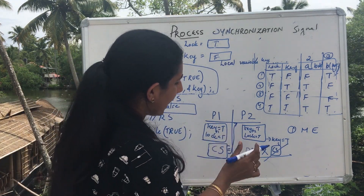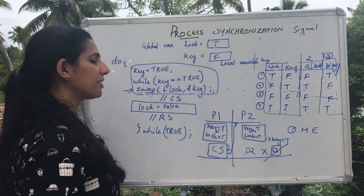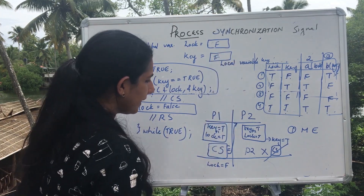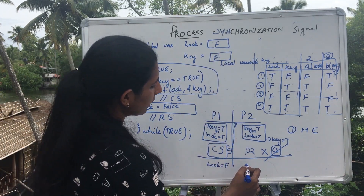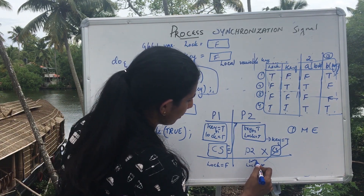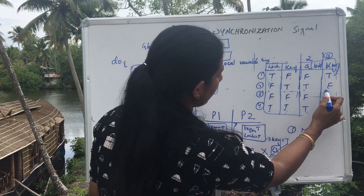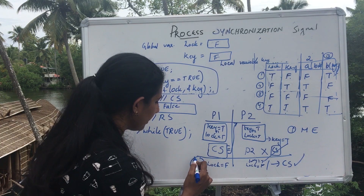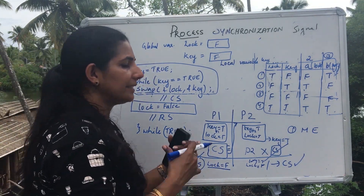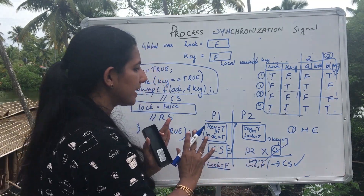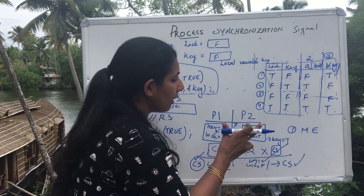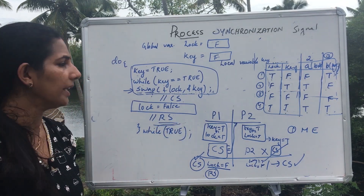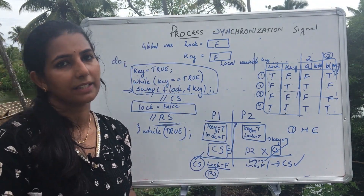When can P2 enter the critical section? When P1 finishes its critical section, it sets lock equal to false. Now lock becomes false. If P2 tries again with key equal to true and lock equal to false, after the swap the key becomes false and P2 can enter the critical section. Once P1 comes out of the critical section and sets lock equal to false, the other competing process can enter. Any other process performing in the remainder section can also enter the critical section.